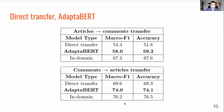AdapterBERT outperforms direct transfer by around 4% in F1 score in the articles-to-comments case and by around 5% in the comments-to-articles case; however, both still fall short of using an in-domain classifier. There are fairly mixed results for the articles-to-comments case, and in the comments-to-articles case AdapterBERT actually comes pretty close to matching in-domain performance even if it's not quite there.